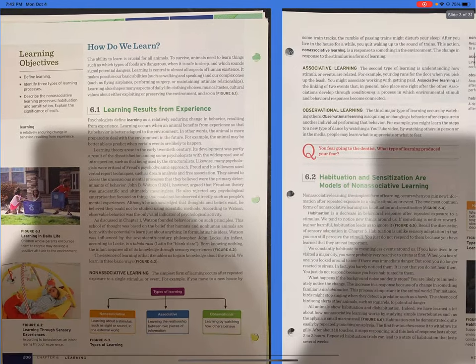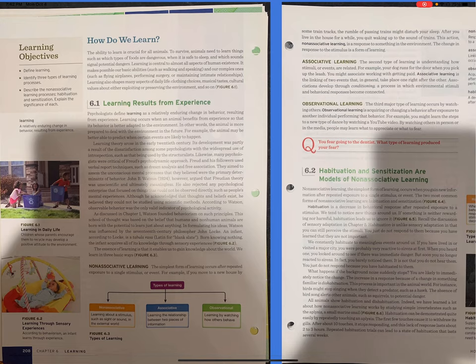How do we learn? The ability to learn is crucial for all animals. To survive, animals need to learn things such as which types of foods are dangerous, when it is safe to sleep, and which sounds signal potential dangers. Learning is central to almost all aspects of human existence. It makes possible our basic abilities such as walking and speaking, and our complex ones such as flying airplanes, performing surgery, or maintaining intimate relationships.